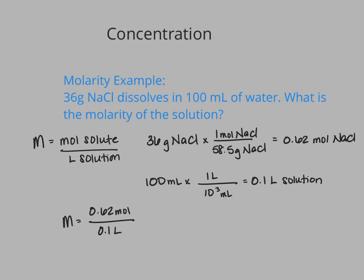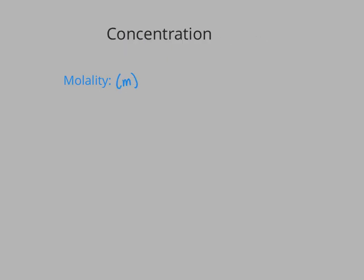So my final answer is going to be 6.2 molar. Our next method for measuring concentration is molality, which is going to be denoted by a little m. Don't confuse molality and molarity — they're quite different ways of measuring concentration. To calculate our molality, we're going to take our moles of solute and divide by kilograms of solvent.